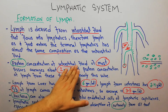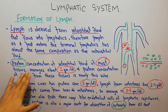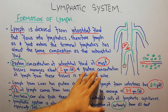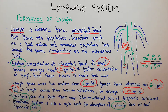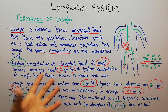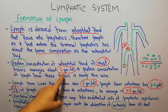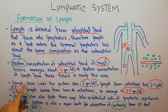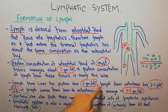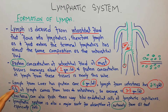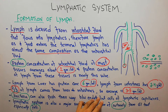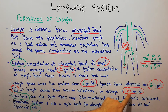To summarize: protein concentration of interstitial fluid is around 2 grams per deciliter, and protein concentration of lymph from most tissues is nearly this value. Lymph from the liver has a protein concentration of 6 grams per deciliter, lymph from the intestine has 3 to 4 grams per deciliter, and since two-thirds of lymph comes from the liver and intestine, the average protein concentration of lymph is around 3 to 5 grams per deciliter.